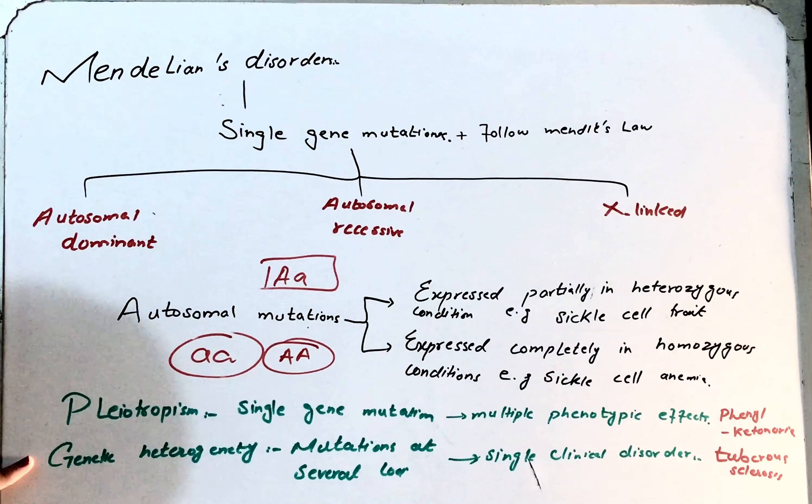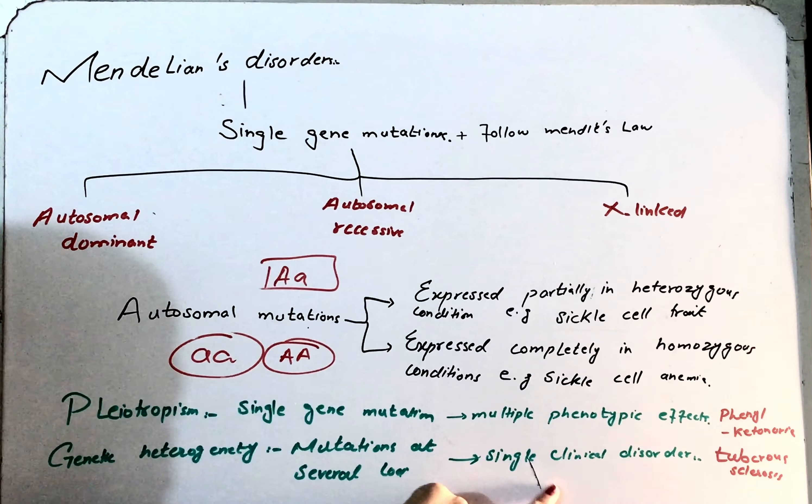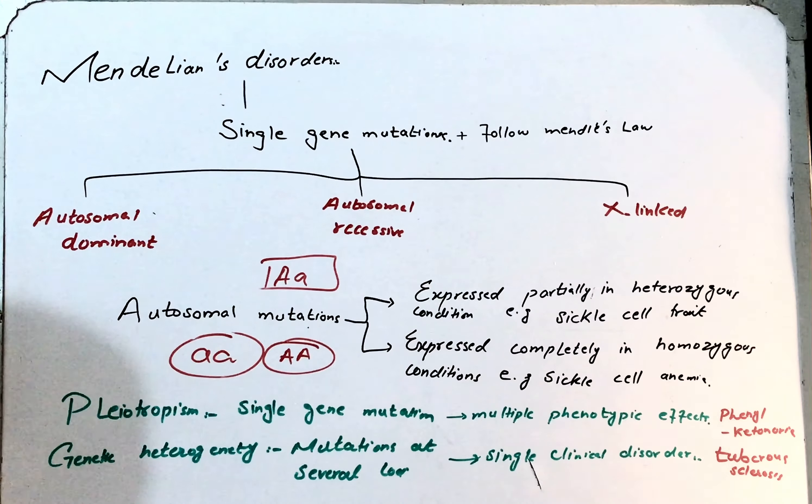Now what is genetic heterogeneity? In genetic heterogeneity, mutations are present at multiple genes, at several loci. But there is manifestation of a single clinical disorder. So basically these two concepts are opposite to each other.